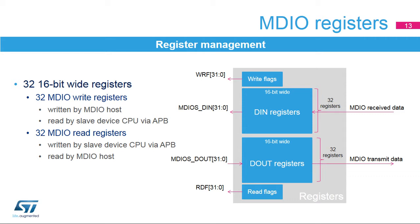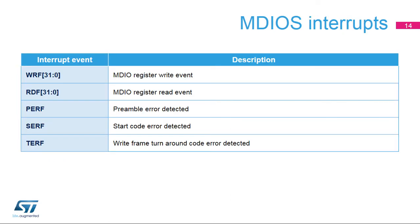For the D-OUT register to reflect the DN data, the device CPU has to copy the data via the APB bus. The WRF31-0 flags may be used to detect write register updates by the MDIO host. The device CPU has a time of 32-bit preamble plus 4-bit start condition plus 5-bit physical address plus 5-bit register address MDC clocks to copy the data before the MDIO host can read the D-OUT register again. Here is an overview of the MDIOS interrupt events. Register accesses by the MDIO host are signaled by bits WRF31-0 for write registers and bits RDF31-0 for read registers. Frame transfer errors are signaled by PERF, SERF, and TERF interrupt events.